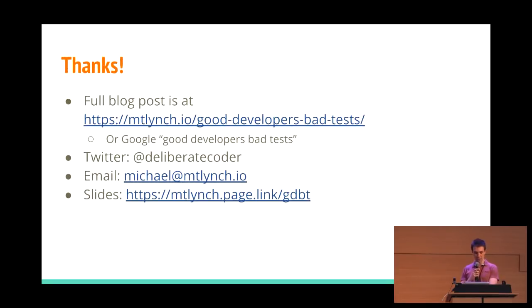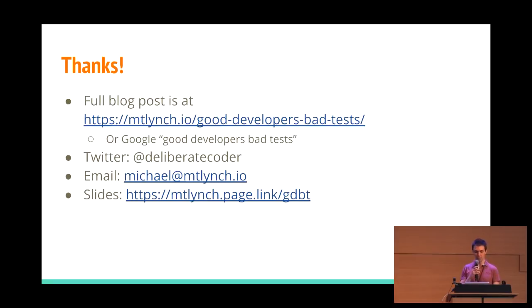In summary: keep the reader in your test function so they're not jumping around to understand it. Eliminating redundancy isn't a goal in itself — accept redundancy if it makes the test more obvious and simpler. If you're tempted to write helper methods, first think about whether you can refactor your production code. Avoid burying critical information in test helpers. Go crazy with long test names, because you never have to call your test functions. And embrace magic numbers — they're not as evil as they are in production code. Thanks to PyTexas for having me. You can find this as a blog post by Googling 'good developers bad tests', and slides are at mtlinch.page.link/gdbt.